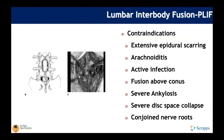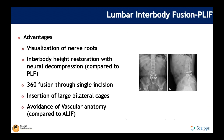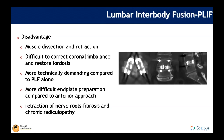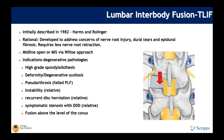PLIF utilizes a direct posterior approach to the disc space and requires significant nerve root retraction, which can present issues. Severe disc space collapse or ankylosis can make disc space access impossible. Advantages include full visualization of the posterior spine and nerve roots, and intervertebral height restoration compared to posterolateral fusion alone. However, PLIF has largely fallen out of favor due to difficulties with retraction and nerve root injury.